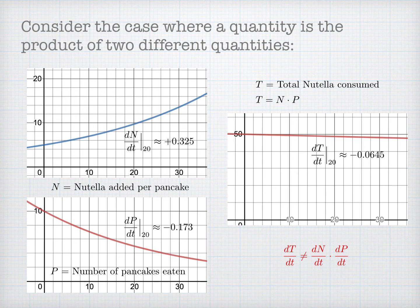And this should make sense, because the units wouldn't make sense either. If I thought about my total Nutella consumed, that might be in grams. So the rate of change of grams per day could not equal grams per pancake per day times number of pancakes per day — I would get the wrong units. In fact, I'd get day squared in the denominator, which is wrong.